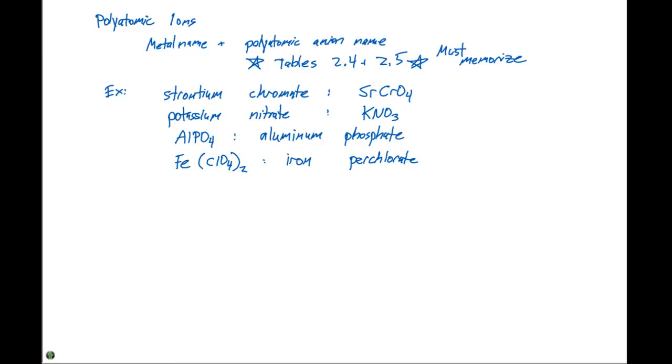And remember, iron is a transition metal, so we need to list its charge in parentheses. So the correct name for this compound would be iron(II) perchlorate.